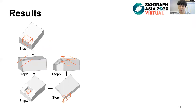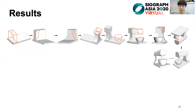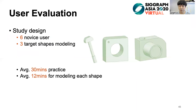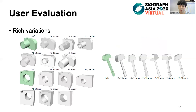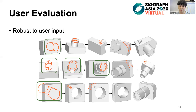A few steps are sufficient to produce a compelling CAD object, and here are more results. We conducted a user evaluation by inviting six novice users to model three target shapes. After a 30-minute tutorial and practice session, every user could model a target shape in about 12 minutes. All models created by participants show rich variations, such as the camera from P2 and the hammer from P5, as they intended to deviate from the reference. The intermediate sketching steps demonstrate the robustness of our system to user input — for example, we successfully translate various strokes into corresponding cylinders, matching user imaginations.